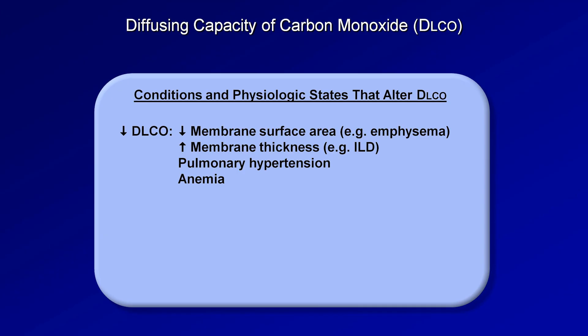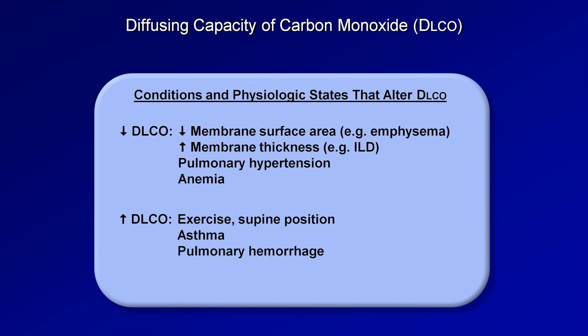Although it doesn't come up often in a clinically relevant context, there are a number of reasons why the DLCO could be higher than predicted. Exercise immediately prior to the test increases cardiac output, and the supine position changes the distribution of pulmonary blood flow and ventilation. Asthma has been empirically found to be occasionally associated with an increase in the DLCO, speculated to be due to increased perfusion of the lung apices, or possibly increased surface area due to modest hyperinflation. Pulmonary hemorrhage increases DLCO by providing a pool of hemoglobin that carbon monoxide can bind to without needing to diffuse across a membrane at all.